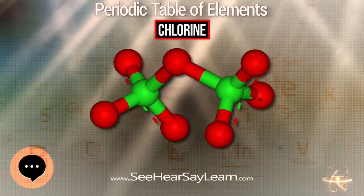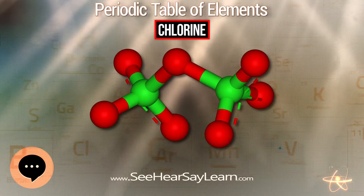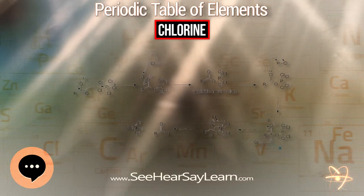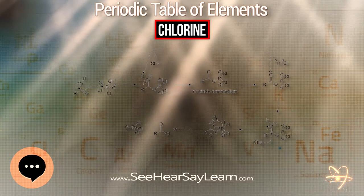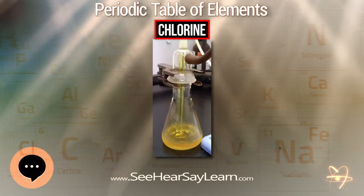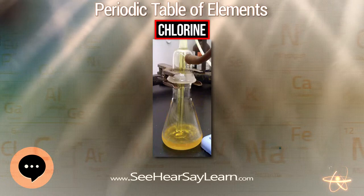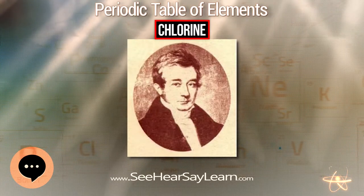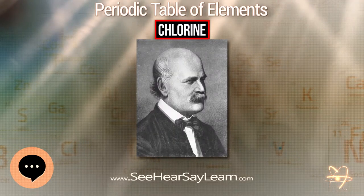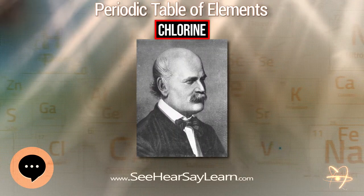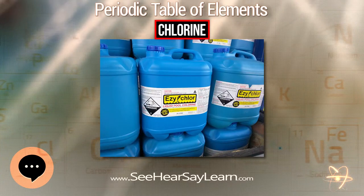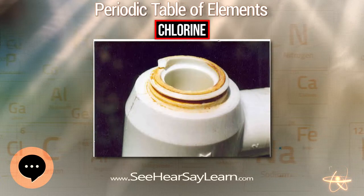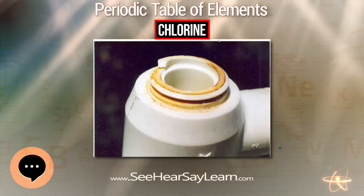HCl is often produced by burning hydrogen gas in chlorine gas, or as a byproduct of chlorinating hydrocarbons. Another approach is to treat sodium chloride with concentrated sulfuric acid to produce hydrochloric acid, also known as the salt cake process. In the laboratory, hydrogen chloride gas may be made by drying the acid with concentrated sulfuric acid. Deuterium chloride, DCl, may be produced by reacting benzoyl chloride with heavy water.